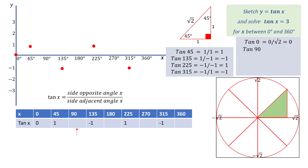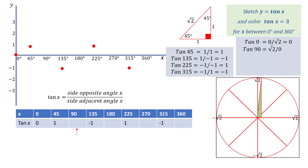Now consider tan of 90 degrees, starting with a right angled triangle and increasing the angle at the centre while still maintaining the right angle. As the angle approaches 90 degrees, the side opposite approaches root 2 and the side adjacent approaches 0, giving tan of 90 equal to root 2 divided by 0, which is infinity. To represent this we draw an asymptote — a vertical line at 90 degrees — where the curve gets closer and closer to this line but never meets it.